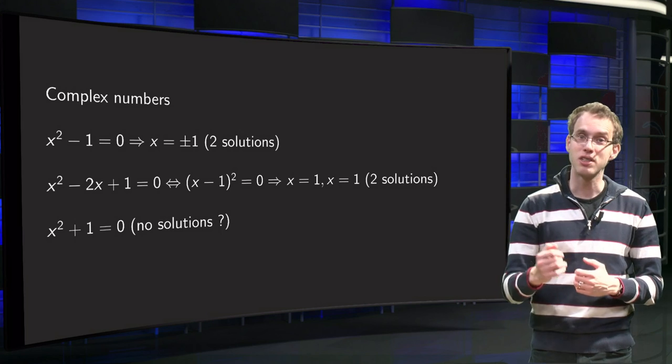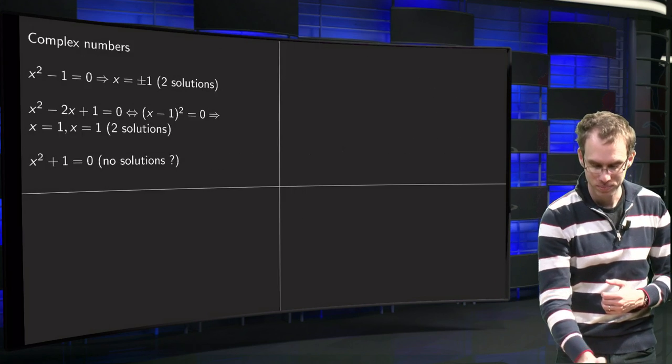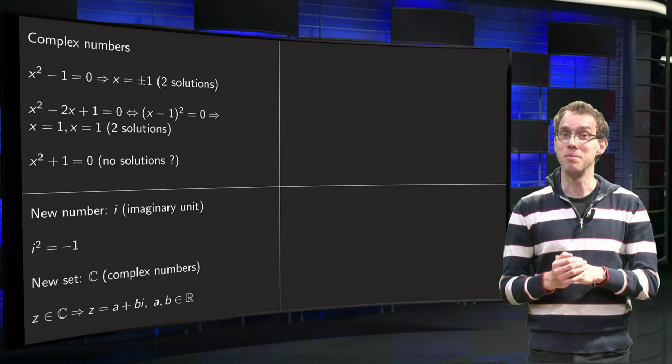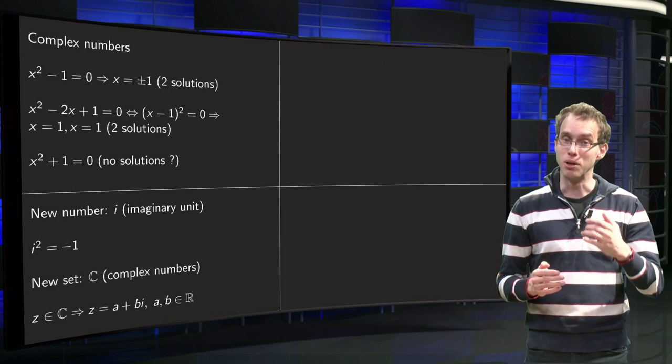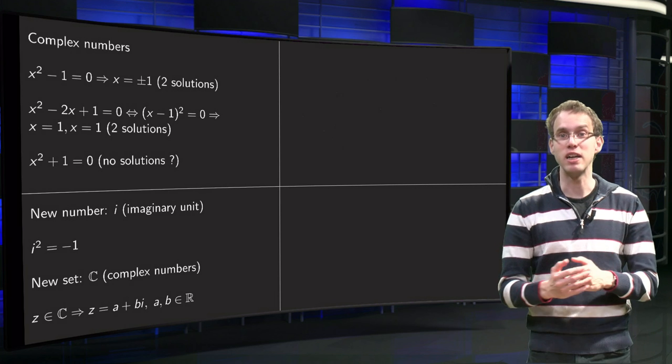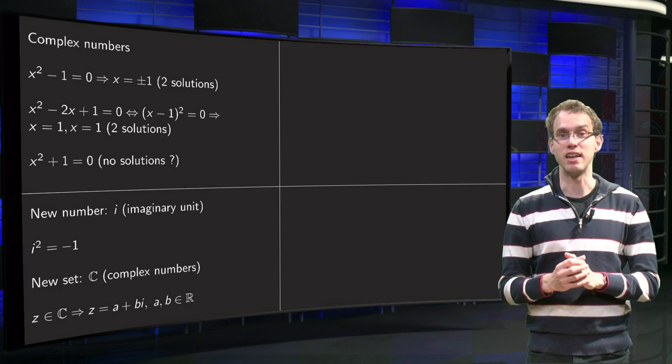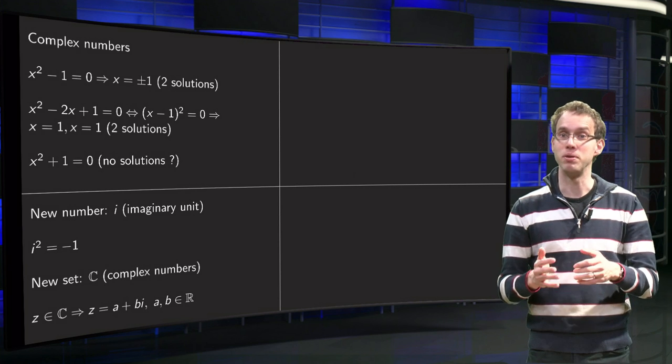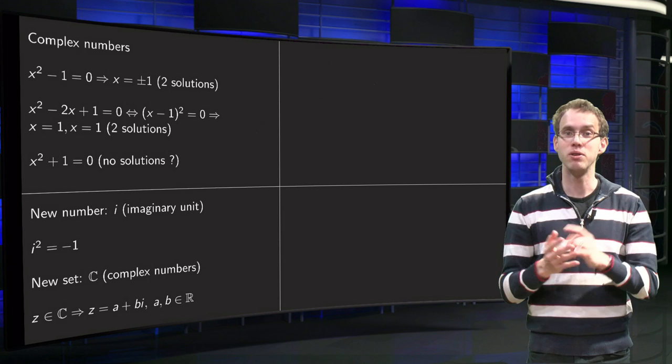We introduce a new number i, the imaginary unit, and that's a number such that i squared equals minus 1, so we immediately see that that is a new number, because the square of any real number will be just positive, so we have one new number i.